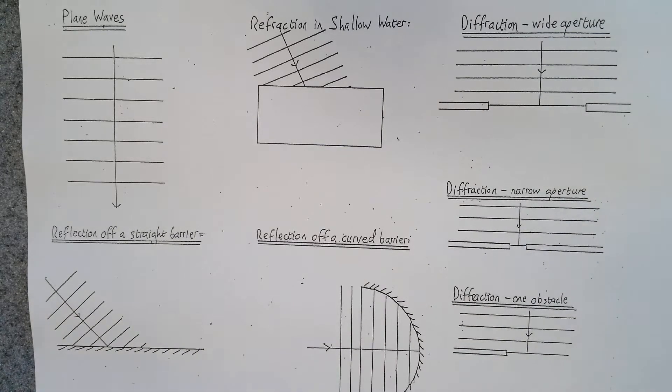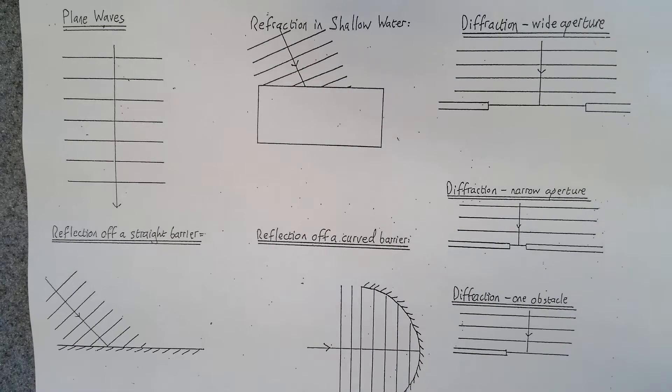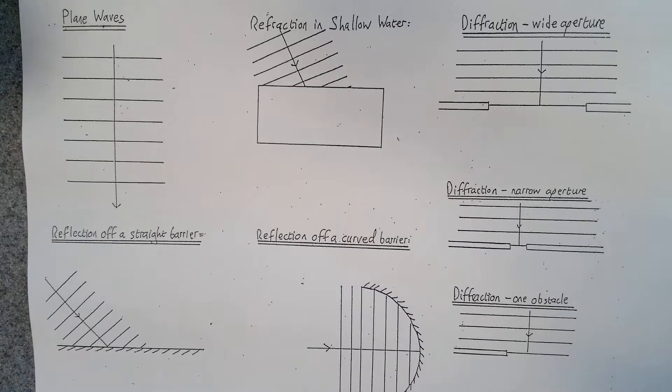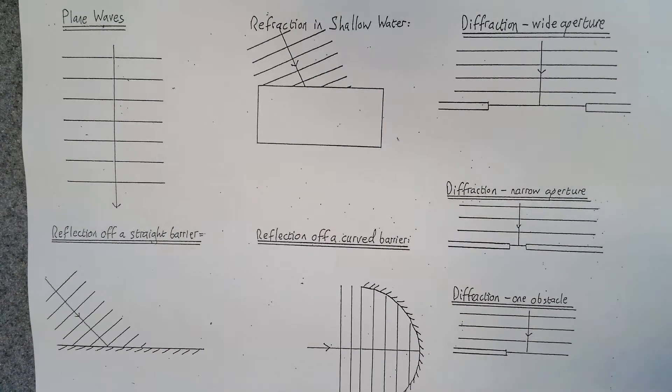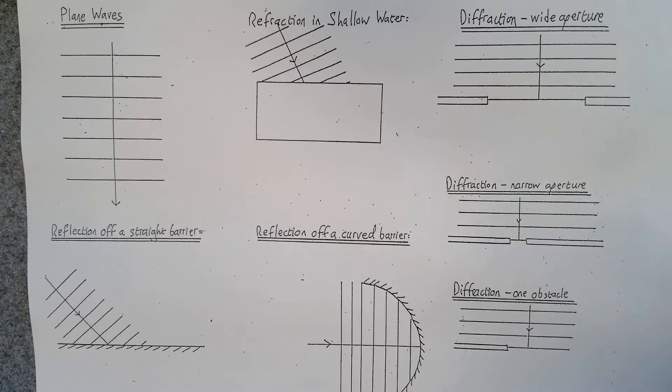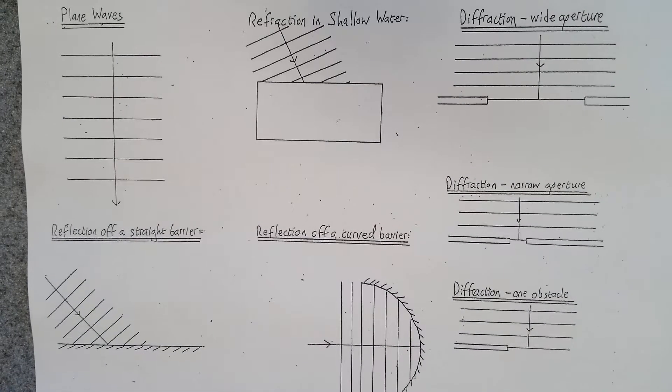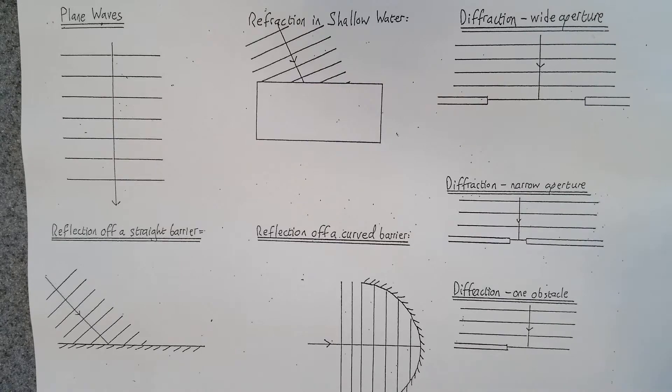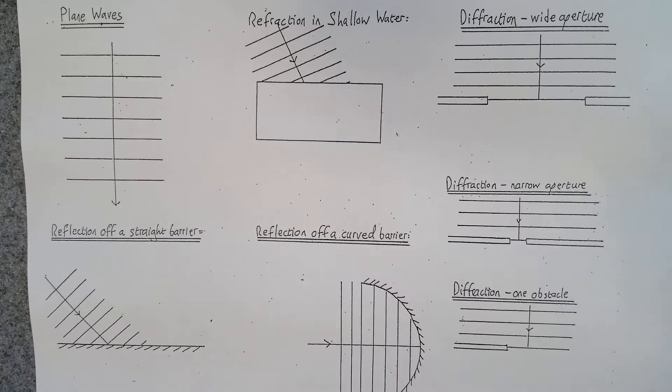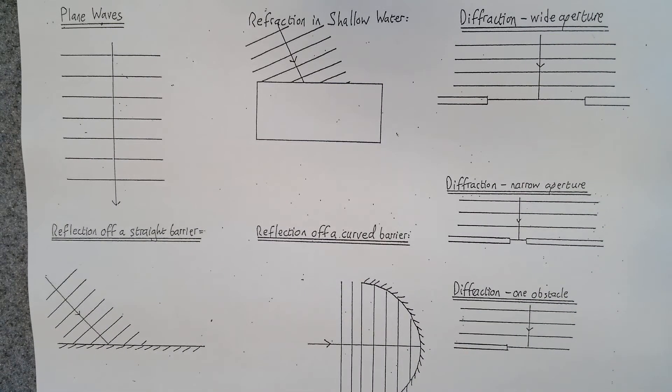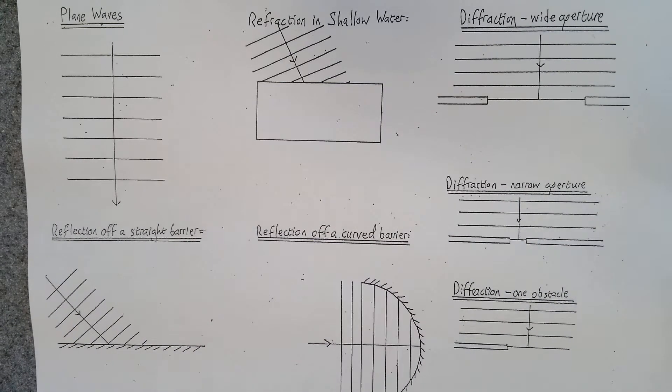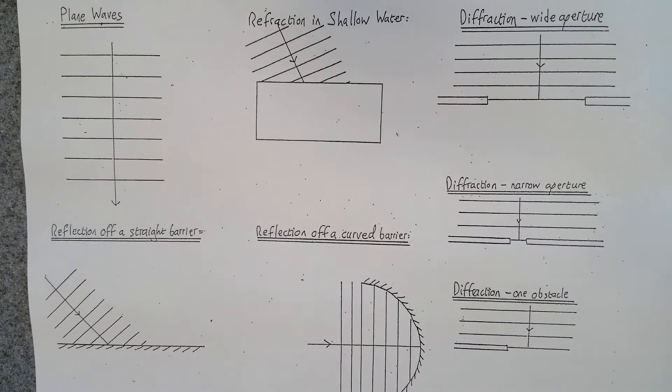This sheet is used to produce diagrams of the different properties of waves that can be seen in a ripple tank. Obviously these are properties that waves show in many contexts, but you should have been able to see them in the ripple tank with the water waves. It's just a way of doing the diagrams on paper to show that you'd also be expected to do this in an exam situation.